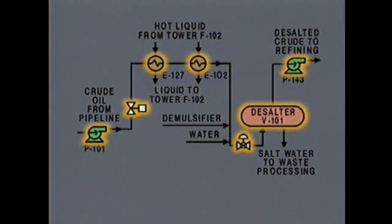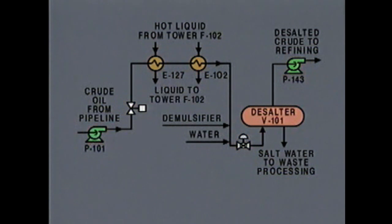The symbols on the diagram can be compared to the actual equipment in the plant, but before we start tracing a system or locating equipment in the plant, it's a good idea to use the diagram to get the big picture of the system.